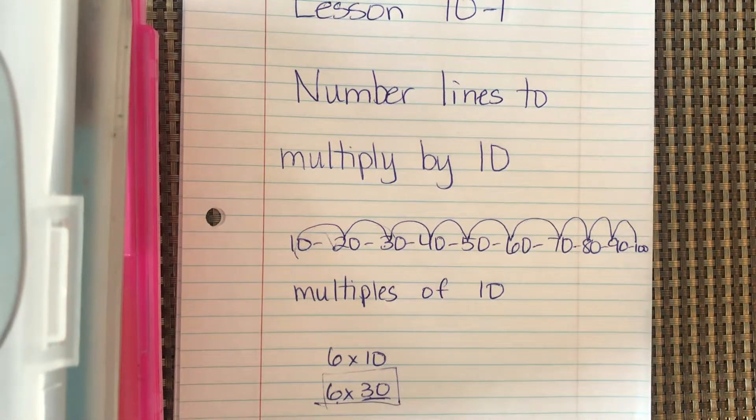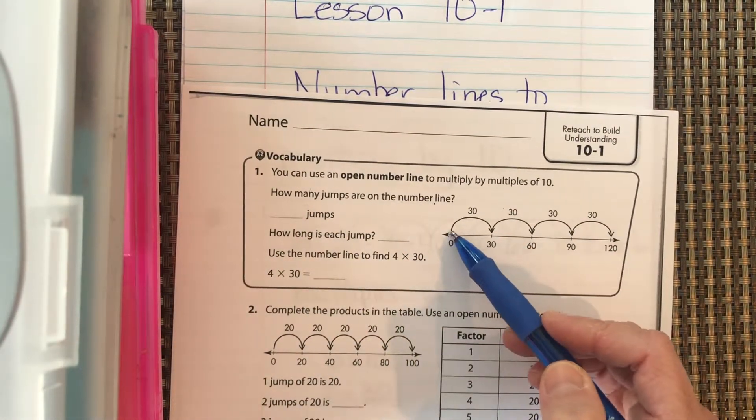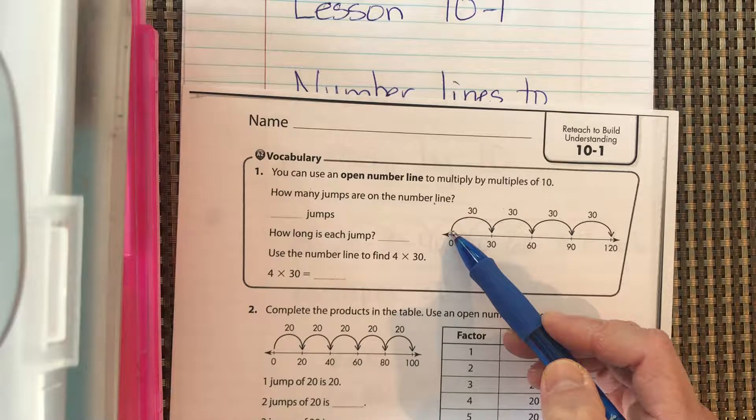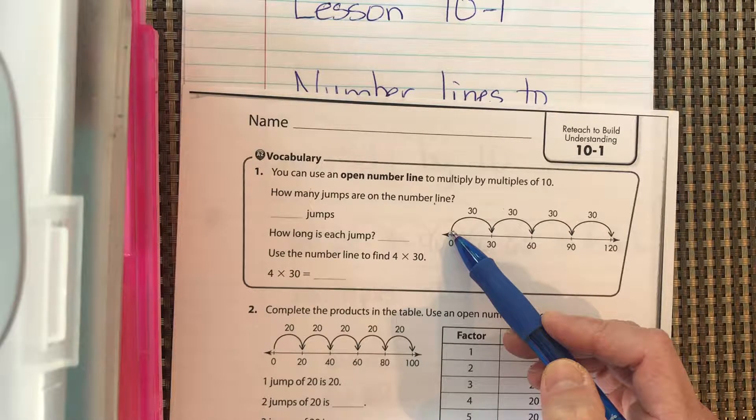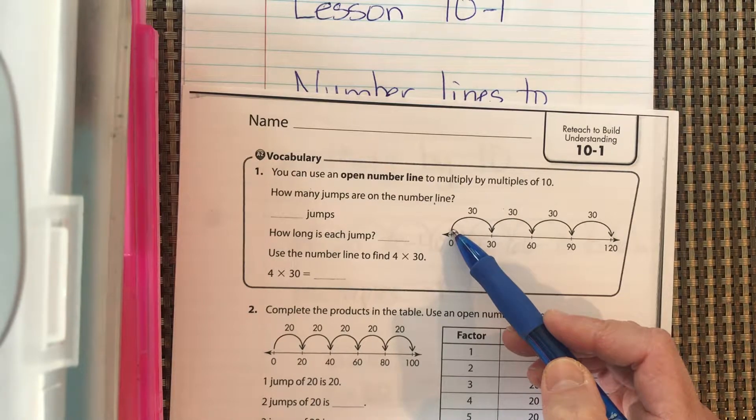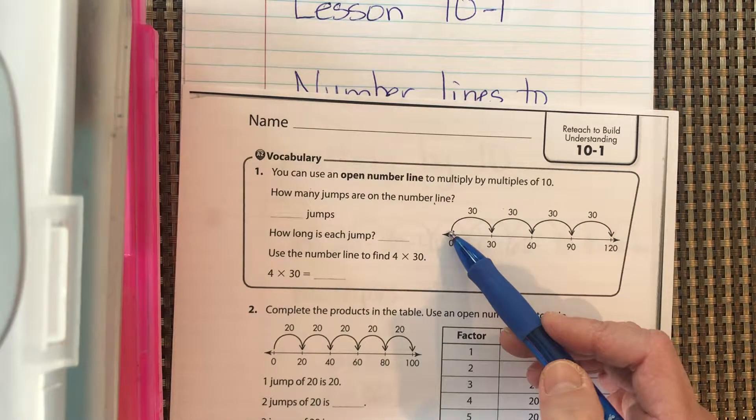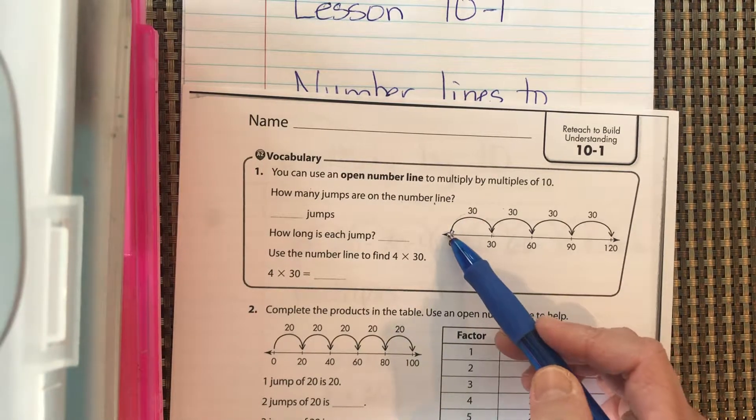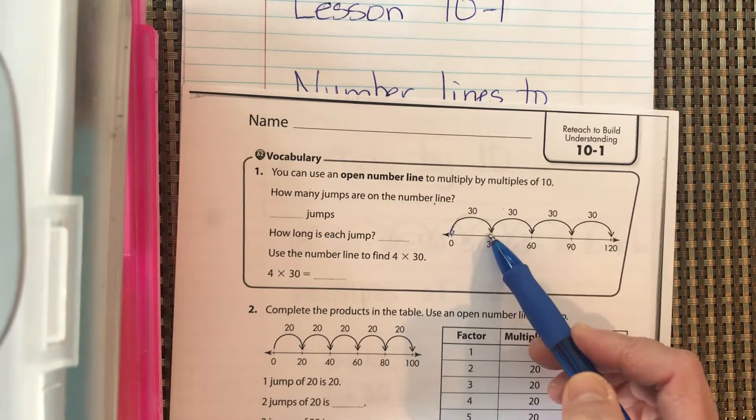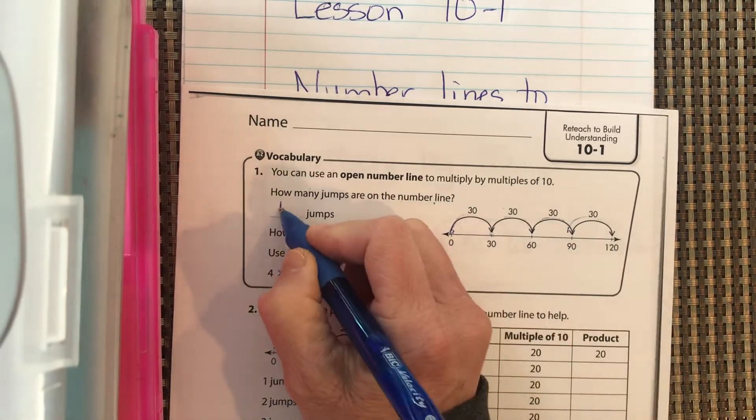So let's start with our sheet. Okay, how many jumps are there on this number line? Remember, this is the start line. This is like where you're waiting for them to blow the whistle and say, okay, go, start your race. You're not going anywhere when you're at the start line. You can't say I finished already. You haven't moved. So you don't count until you've moved. So how many jumps do we have? 1, 2, 3, 4. Four jumps.